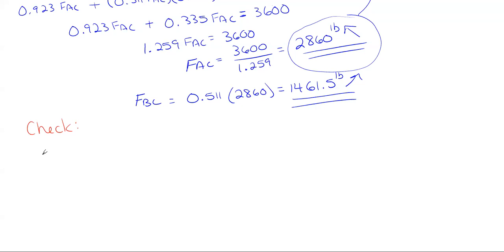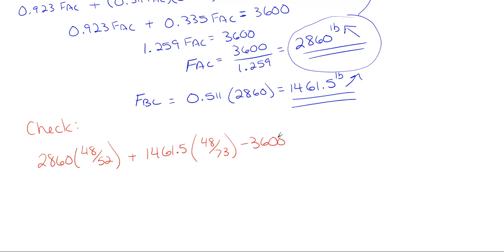Plugging back into ΣFy: 2860 × (48/52) + 1461.5 × (48/73) − 3600 gives an answer of 0.98, not exactly zero. That doesn't mean something went wrong. It will rarely come out to be exactly zero because of rounding — we rounded the ratios to decimal form and rounded our final answers. If every number were kept exact, the result should be zero.